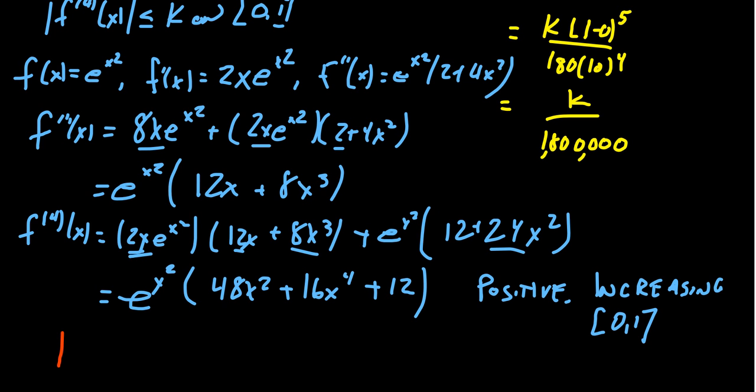So in particular, our k value will be at the maximum. That's what it's supposed to be. But the maximum will be at the right endpoint. So this is going to be the fourth derivative evaluated at 1. So we get an e. We're going to get 48 plus 16 plus 12, which adds up to be 76e. That is our k value.